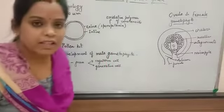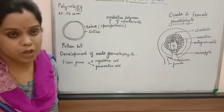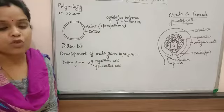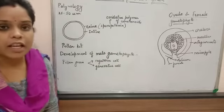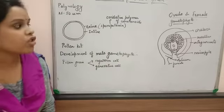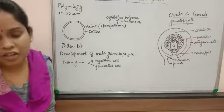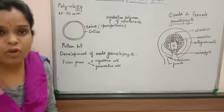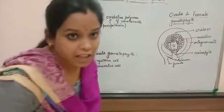Good morning students, this is part 3 of chapter number 2, sexual reproduction in flowering plants. In this video we will be studying about the structure of pollen grains.